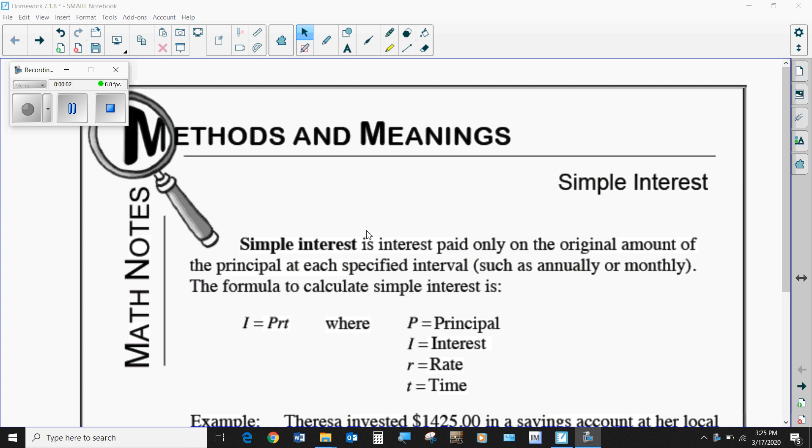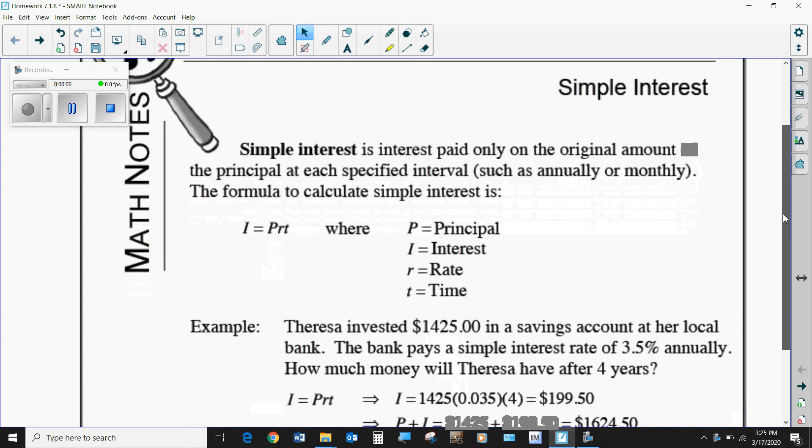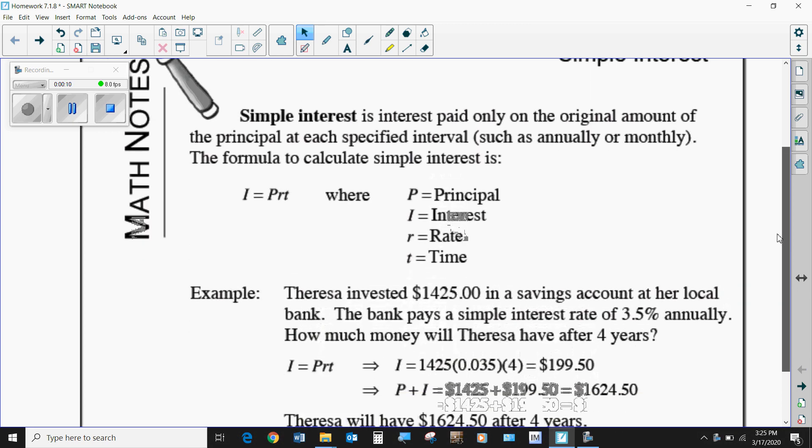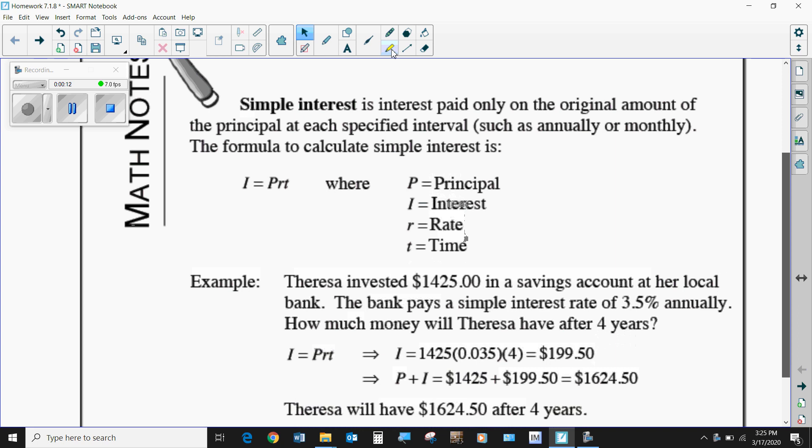Alright, so going over last night's homework. First we have the M&Ms. I really encourage you to copy all this down completely so that you understand how simple interest works. There's four basic components to it: you've got your interest, your principal, your rate (interest rate), and the amount of time.